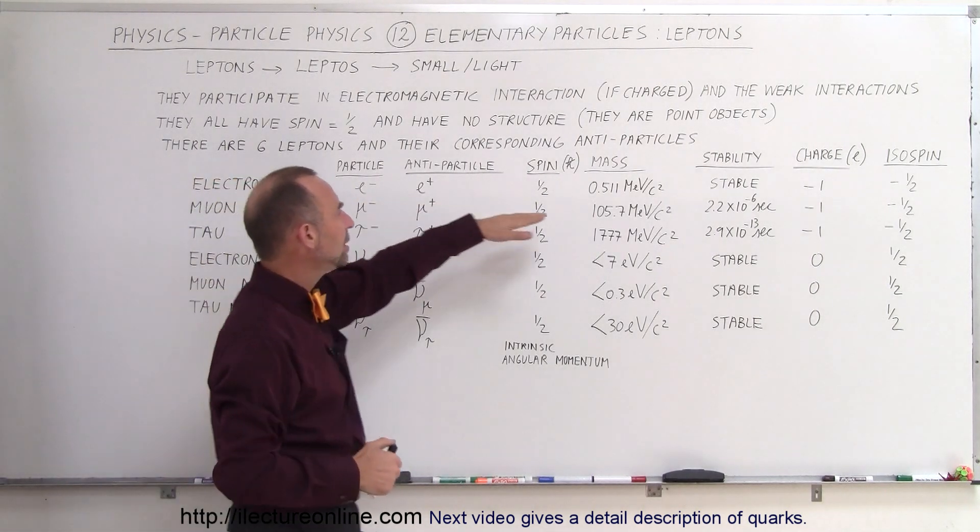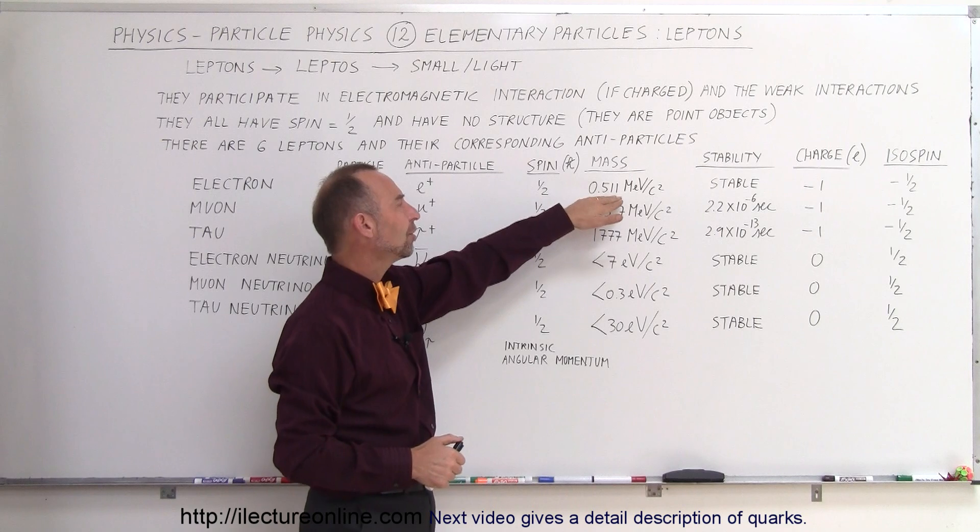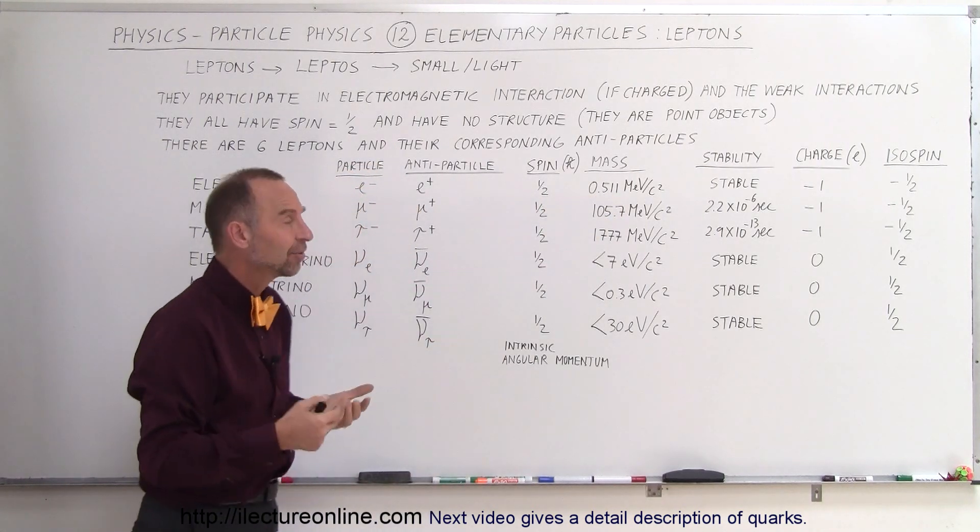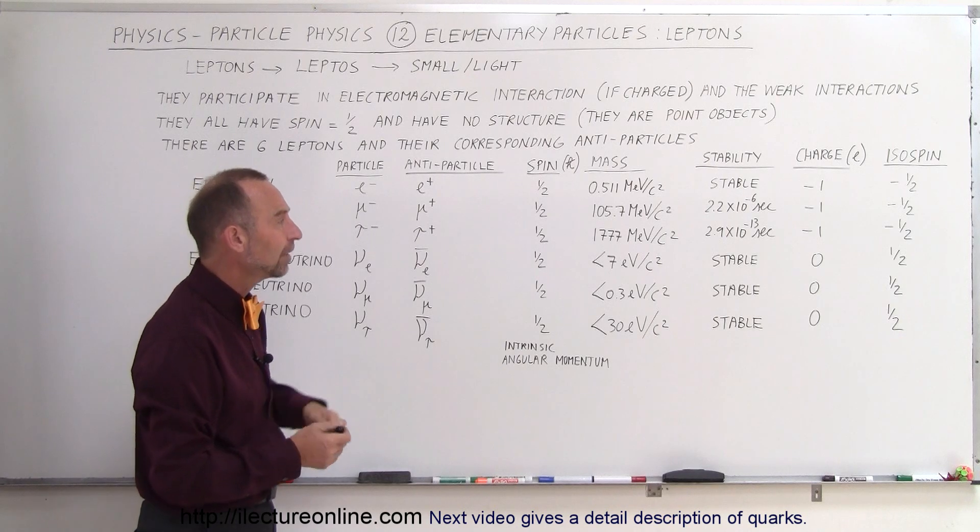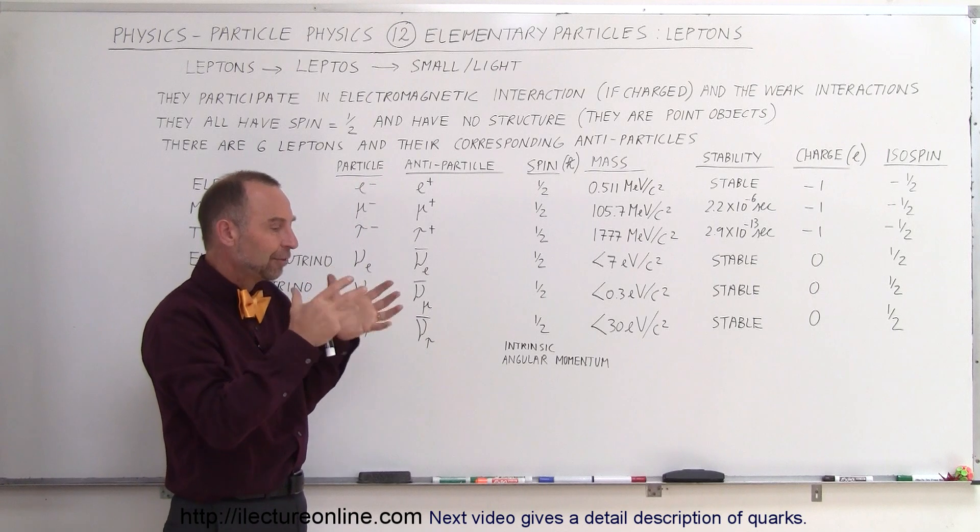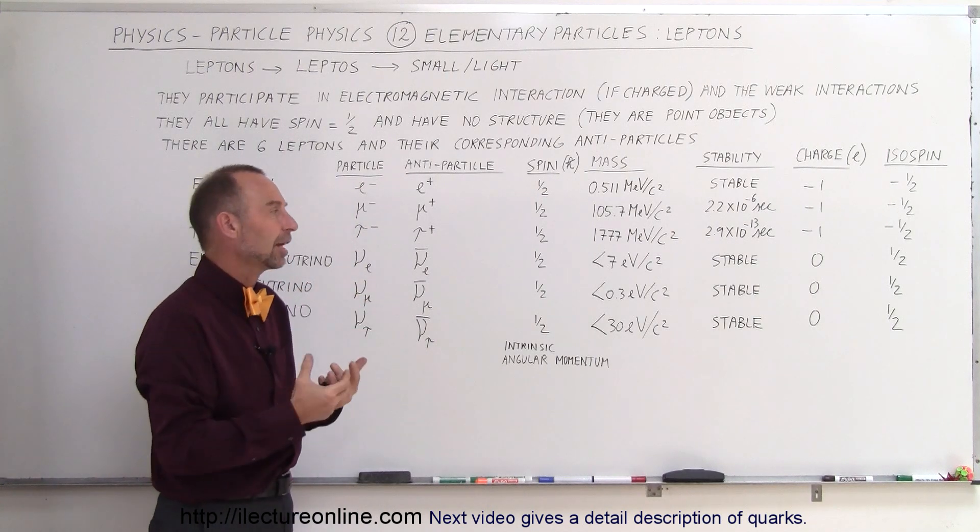So let's say 511,000 electron volts or 0.511 MeV, M stands for mega or million. So it takes a little bit over half a million electron volts in order to have enough energy to make the mass of a single electron.